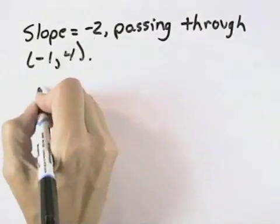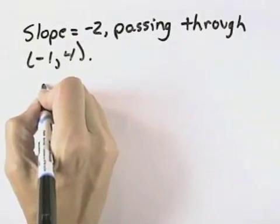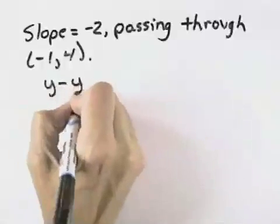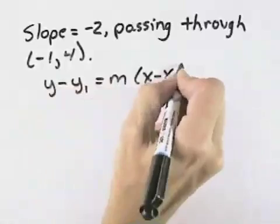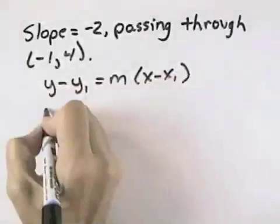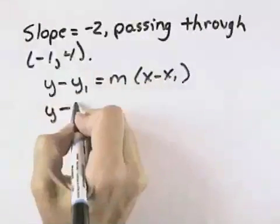But what we need to do is first write our equation in point-slope form, which is y minus the y value of your point equals m, times x minus the x value of your point. So we have y minus the y value of our point is 4.